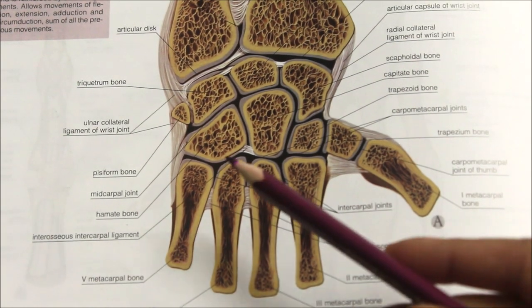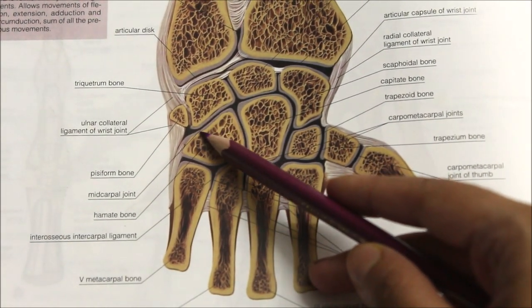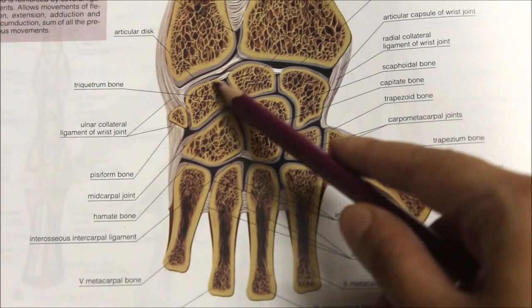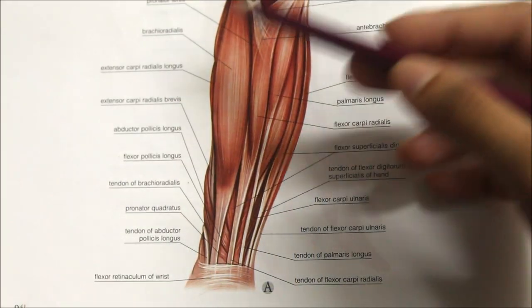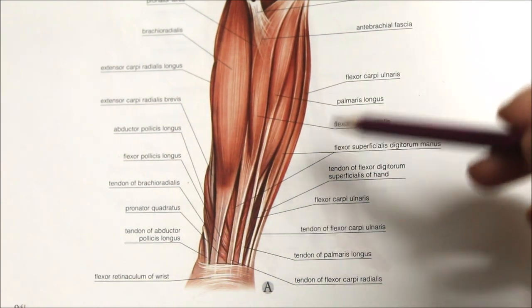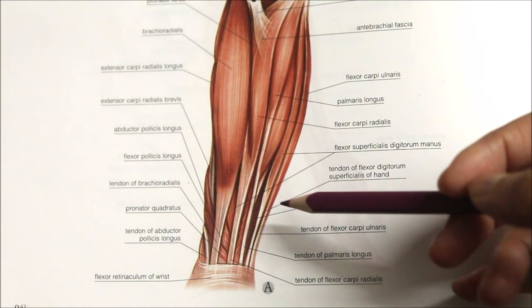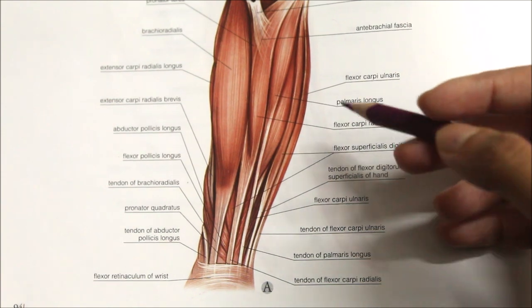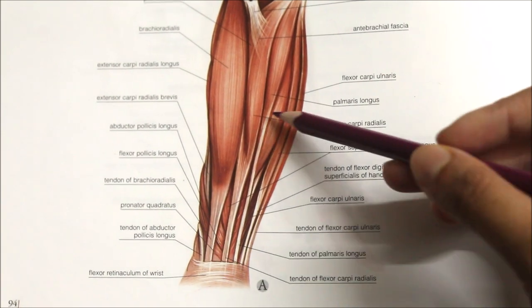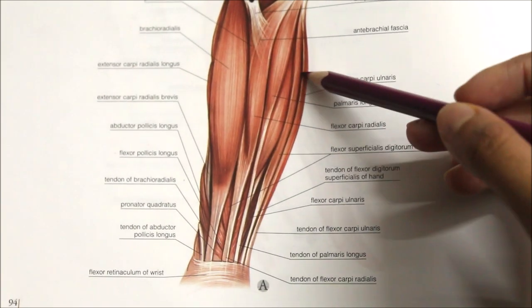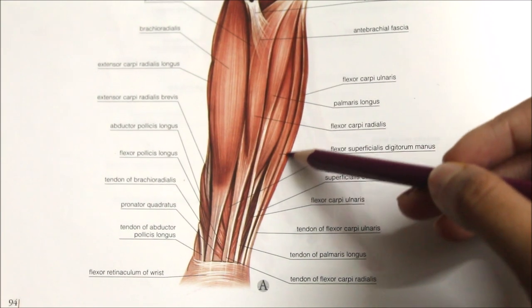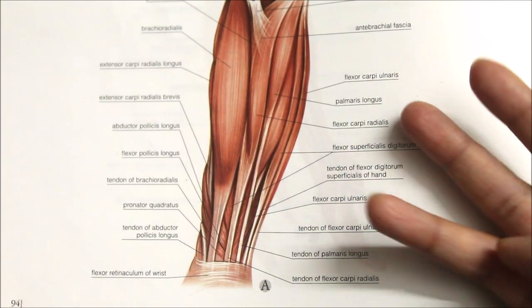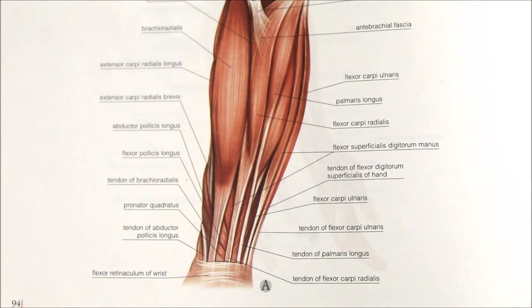The flexion movement occurs more at the mid carpal joint than at the wrist joint. The main flexor muscles are the flexor carpi radialis, the flexor carpi ulnaris and the palmaris longus.